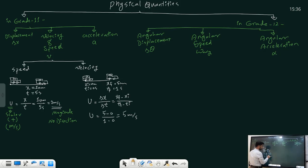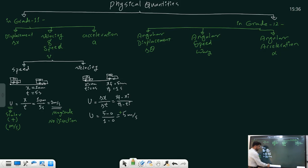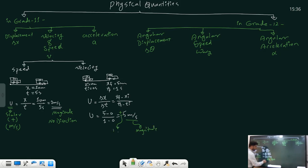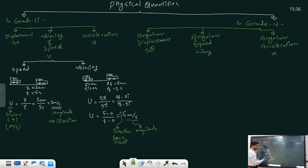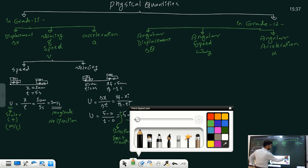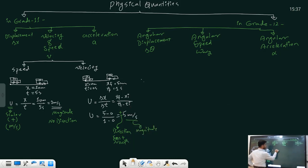This result tells us two things: one is the magnitude of velocity, which is 5 meters per second, and the other is the direction. The direction is positive when the object travels to the east or north, and it can be negative when the object travels to the west.